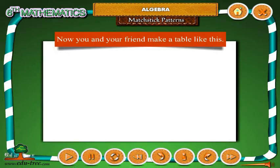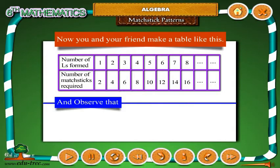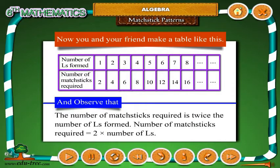Now, you and your friend make a table like this and observe that the number of matchsticks required is twice the number of L's formed.